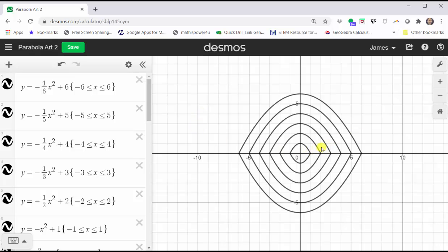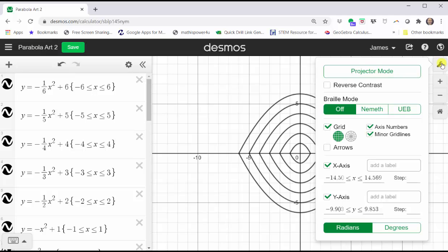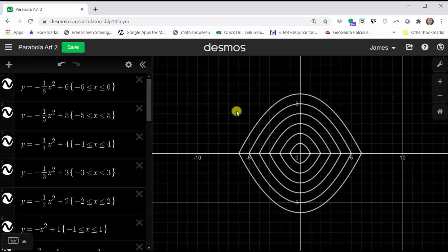Notice how we have a fairly simple design. The artwork is symmetrical across the x and y axes. One thing we can do is click on the wrench in the upper right-hand corner and click the box for reverse contrast. This will change the coordinate plane to black and the graph to white.